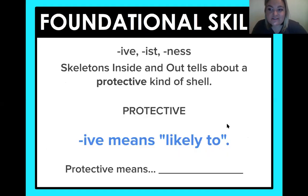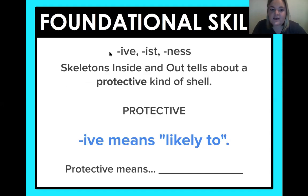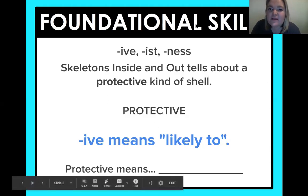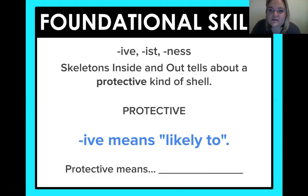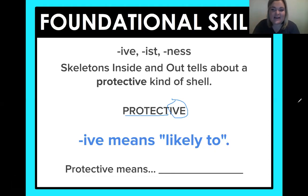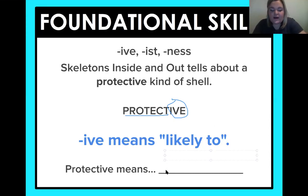The foundational skill today is these suffixes. A suffix comes at the end of a word. So if you can see I-V-E comes at the end of this word, protective. It says in Skeletons Inside and Out it tells about a protective kind of shell. So if you ever see I-V-E at the end of a word, it's telling you that it's likely to whatever the base word is at the beginning. Protective means something that is likely to protect — it's that easy. You just take the I-V-E, change it to 'likely to,' and then add back in this suffix. So: likely to protect. Easy peasy, right?